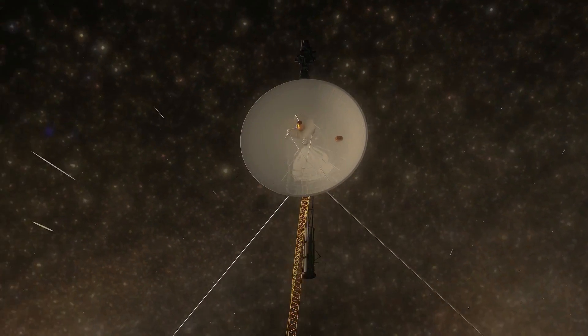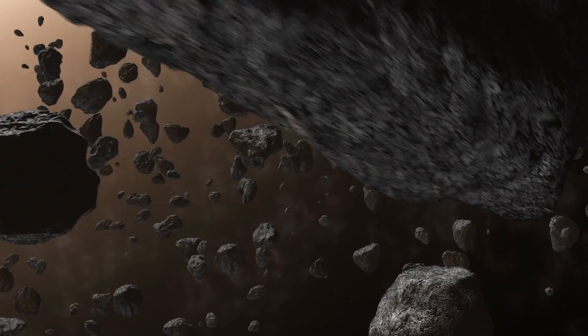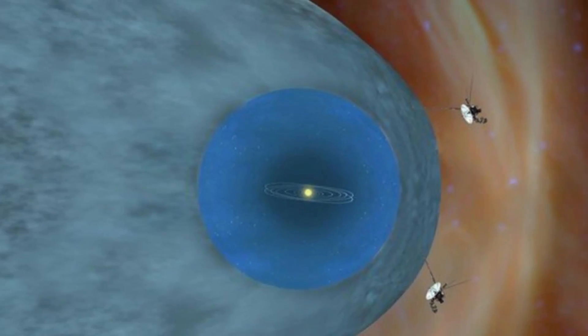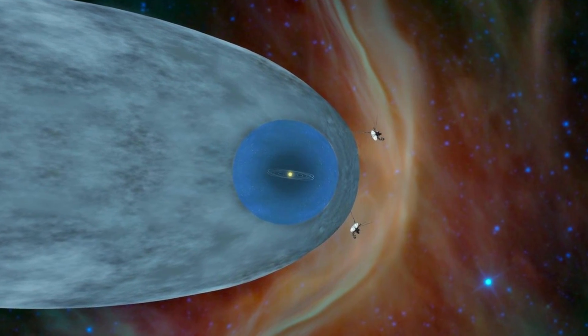For example, they had to navigate through the asteroid belt and avoid potential collisions with debris. They also encountered strong radiation fields and had to adjust their instruments to protect them from damage.